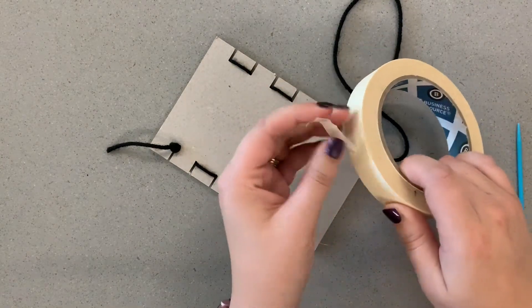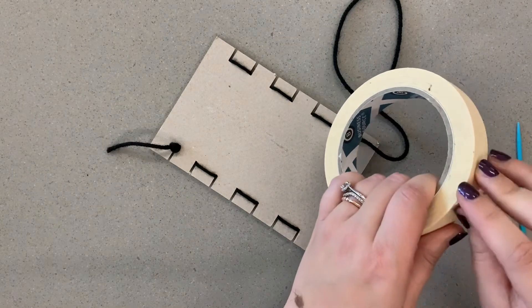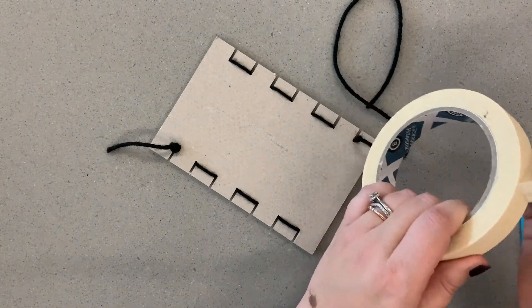So then you can take a piece of masking tape to kind of hold those in place and keep them out of your way. We don't want to cut them. We want to keep them there. But then you'll write your name on the masking tape.